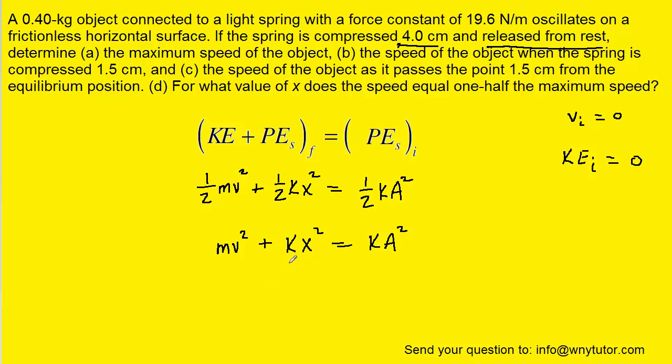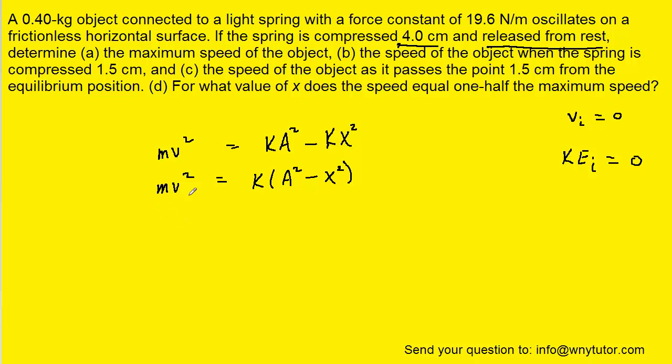We'll go ahead and then subtract kx squared to the right hand side. We can actually factor out a k from the two terms on the right side. We could then divide both sides by the mass m and then finally take the square root of both sides of the equation.